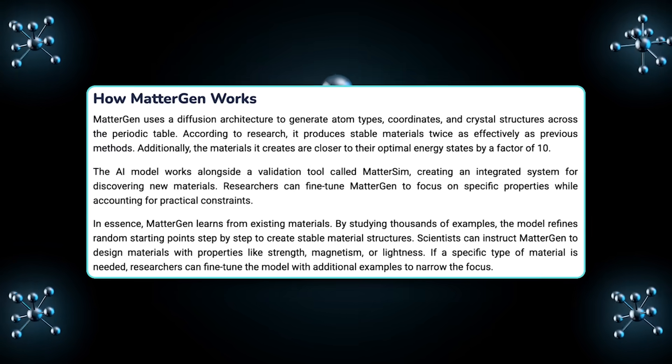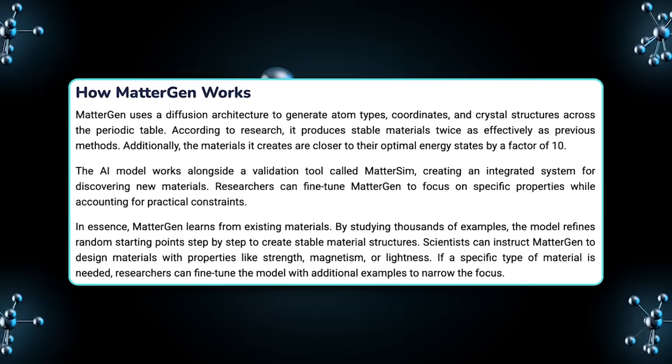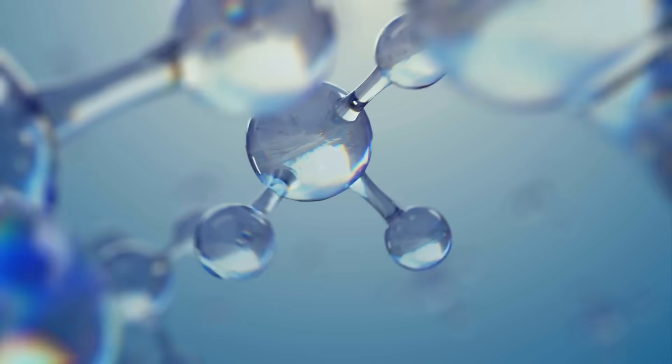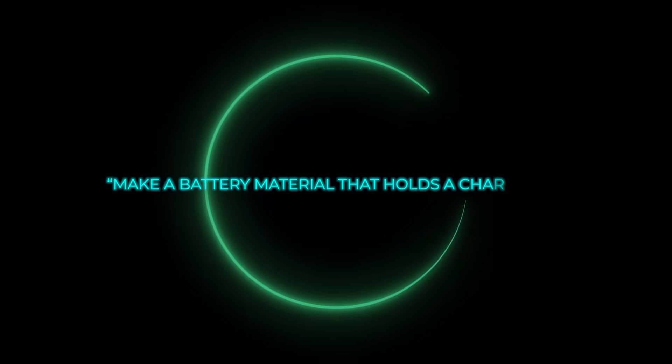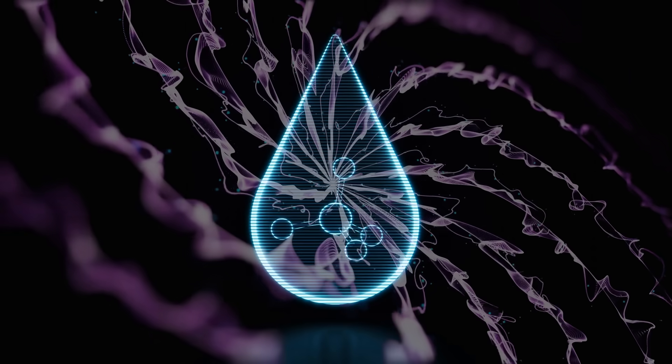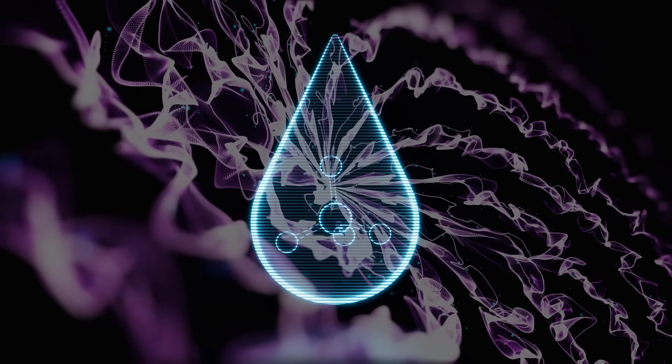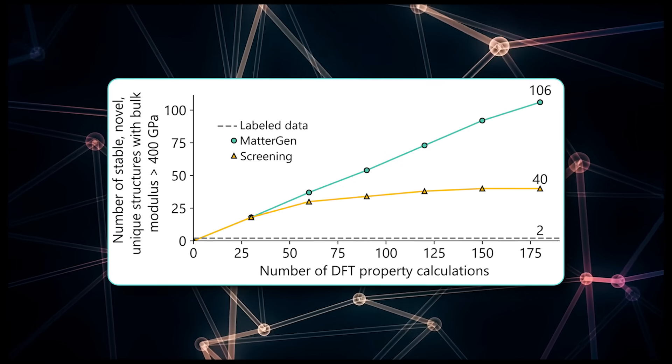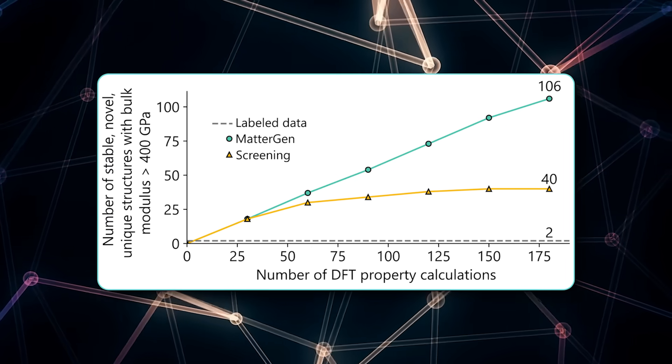Enter Mattergen, a generative AI model that's like a text-to-image AI, except for materials. Rather than scanning an enormous universe of possibilities, researchers just tell the AI what properties they want. Like, make a battery material that holds a charge for X hours and is stable at Y temperature. And Mattergen comes up with a blueprint. According to the research, the first time they synthesized a Mattergen-generated material, its properties were within 20% of the targeted values. That's extremely promising for a first attempt.